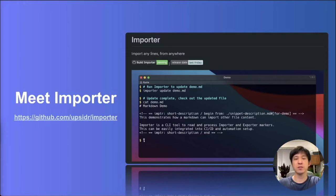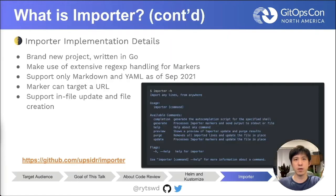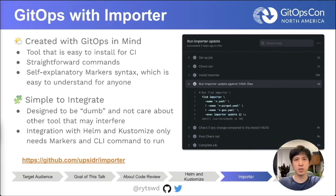Now it's time to introduce Importer. Importer is a CLI tool to import any lines from anywhere. It works by parsing the provided file and looking for special markers, which are mainly provided as language comments. These markers define where to import the code from. The imported lines then appear in the file. Importer is a brand new project I've started. It is designed to be simple — and in a way, dumb. It doesn't know anything about file validity; it just looks for matching markers and imports data when necessary. This design was key to ensure it can work with Helm and Kustomize. Importer is not to replace existing tools, but to augment them.